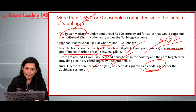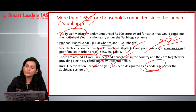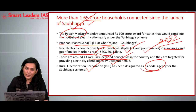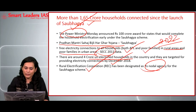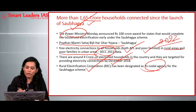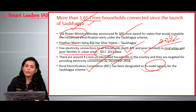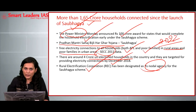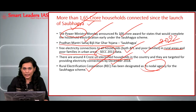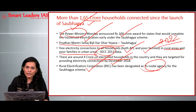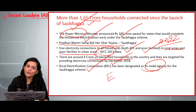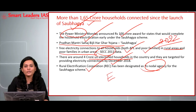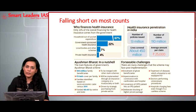According to recently released government data, more than 1.6 crore households have already been connected under the Saubhagya scheme. To increase the scheme's reach and efficiency, the government has also announced a 100 crore award for states providing effective electrification. This is in the spirit of cooperative federalism between different states. This award scheme is a manifestation of the principle of competitive federalism followed by the union government, which may in turn increase the efficiency of service delivery between different states.